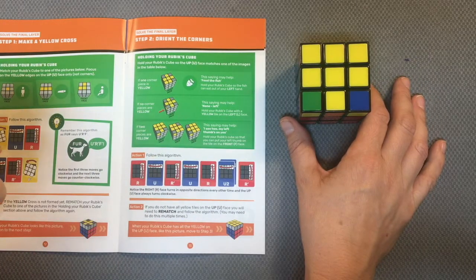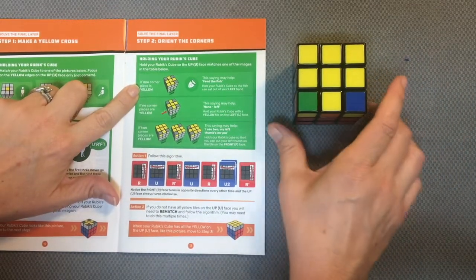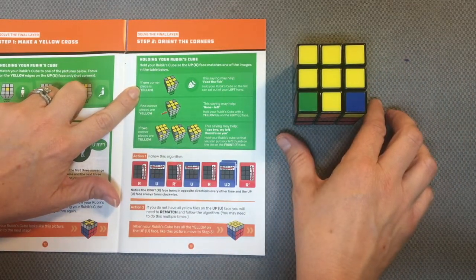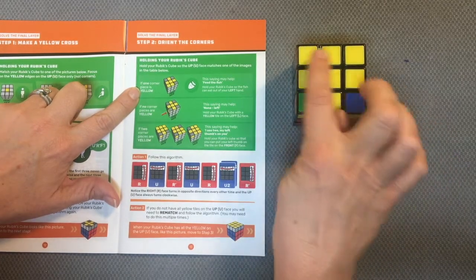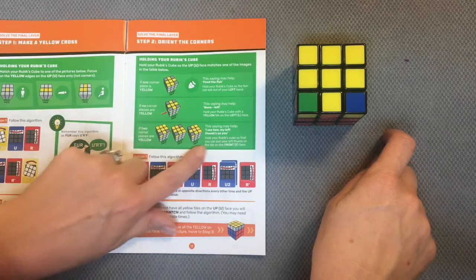Here I have a different set of patterns that I need to match. So I need to hold my up face, which is the yellow face, and look at my options. I know I have six of these, so I'm going to look for a pattern that has six, which I see down here. It's one of these two.